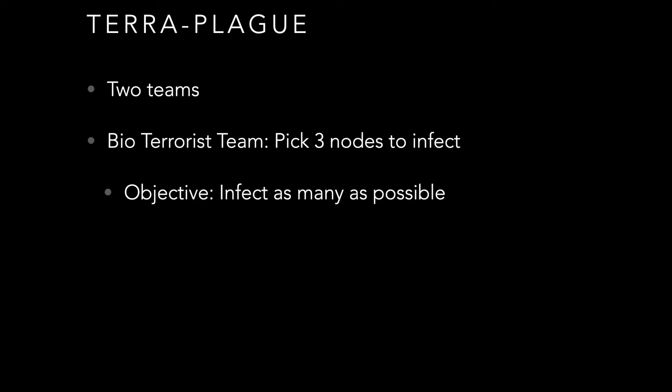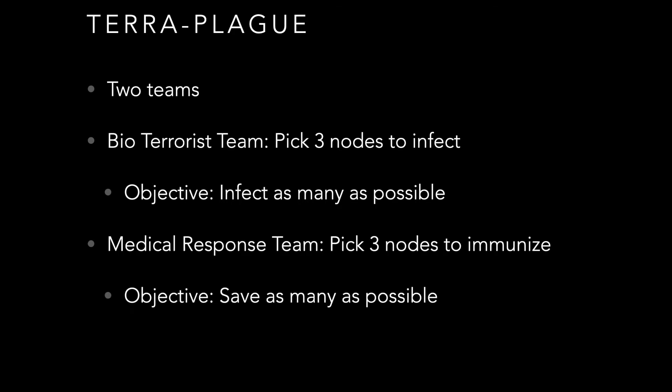When doing this module in class in person, we had an activity called the Terra Plague, where we broke the class into two teams. The bioterrorist team picks three nodes in a graph to infect with the objective of infecting as many as possible, and the medical response team picks three nodes to immunize, with the objective of saving as many people as possible. You take turns picking nodes alternately — similar to the board game Pandemic, but with a more human-driven mechanical aspect.